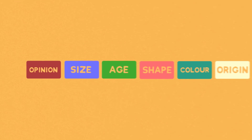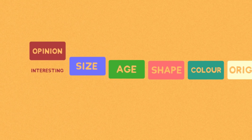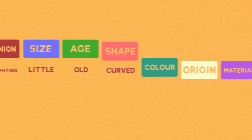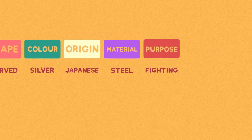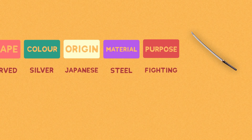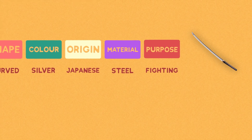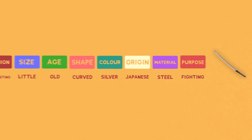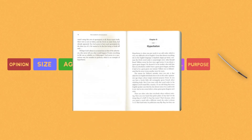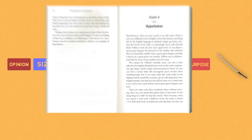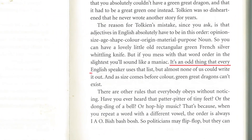Following this, we can have an interesting little old curved silver Japanese steel fighting sword. But messing with this structure will sound odd. As Forsyth says, it's an odd thing that every English speaker uses that list, but almost none of us could write it out.